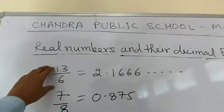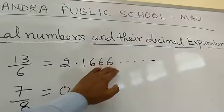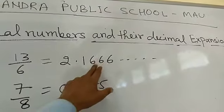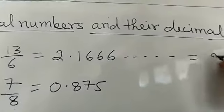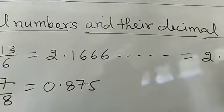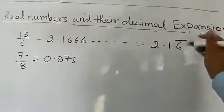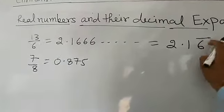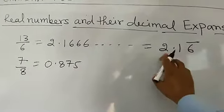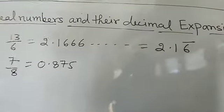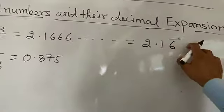In the rational number 13 by 6, a certain digit is repeated — here 6 is repeated. So it can be written as 2.16 with a bar over the 6. That bar means 2.1 and then 6 is repeated up to infinite. So it is written as 2.16 bar.